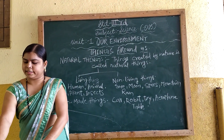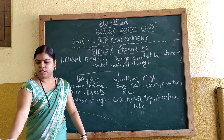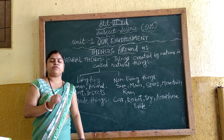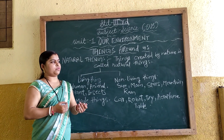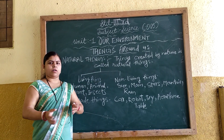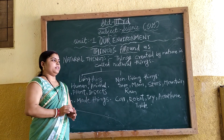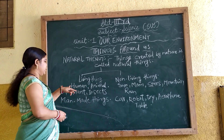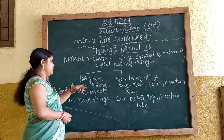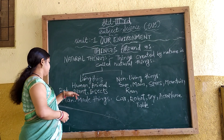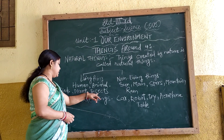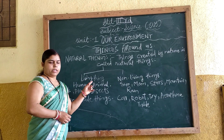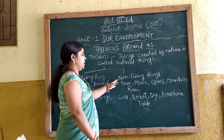They can reproduce. They can feel and move. For example, humans, animals, birds, plants, and insects are all called living things.